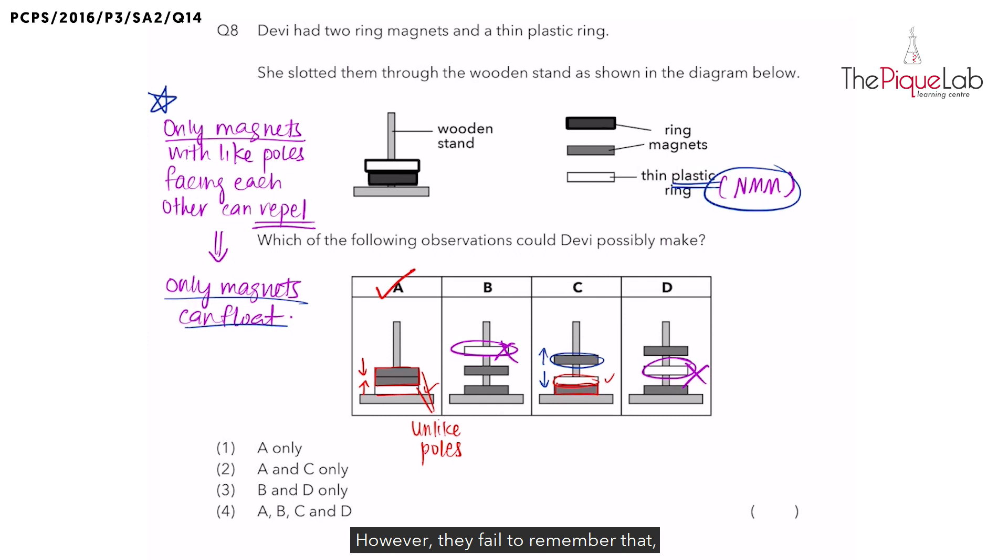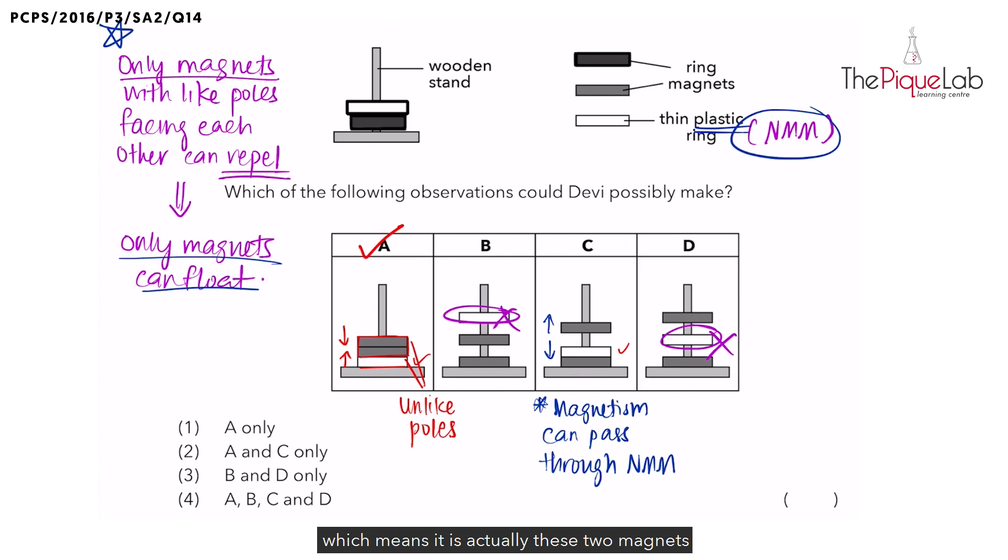However, they fail to remember that magnetism can pass through non-magnetic materials. So I want us to write this down. Magnetism can pass through non-magnetic materials. Which means it is actually these two magnets which are repelling each other. And the magnetic force of repulsion can pass through the plastic, which is a non-magnetic material. And therefore, the like poles of the two magnets are facing each other, causing them to repel. Therefore, option C is also possible.